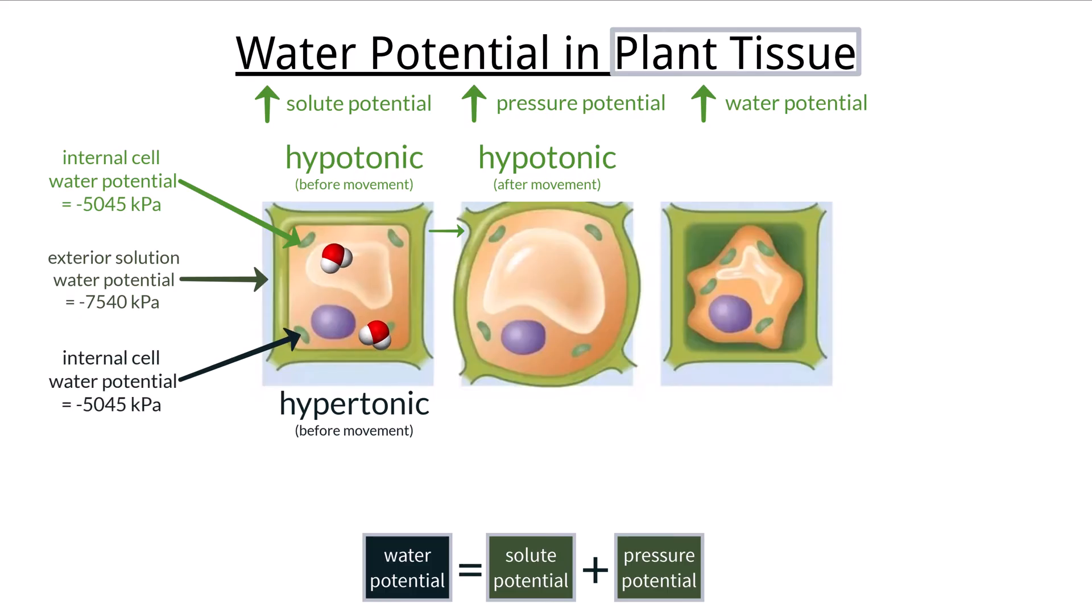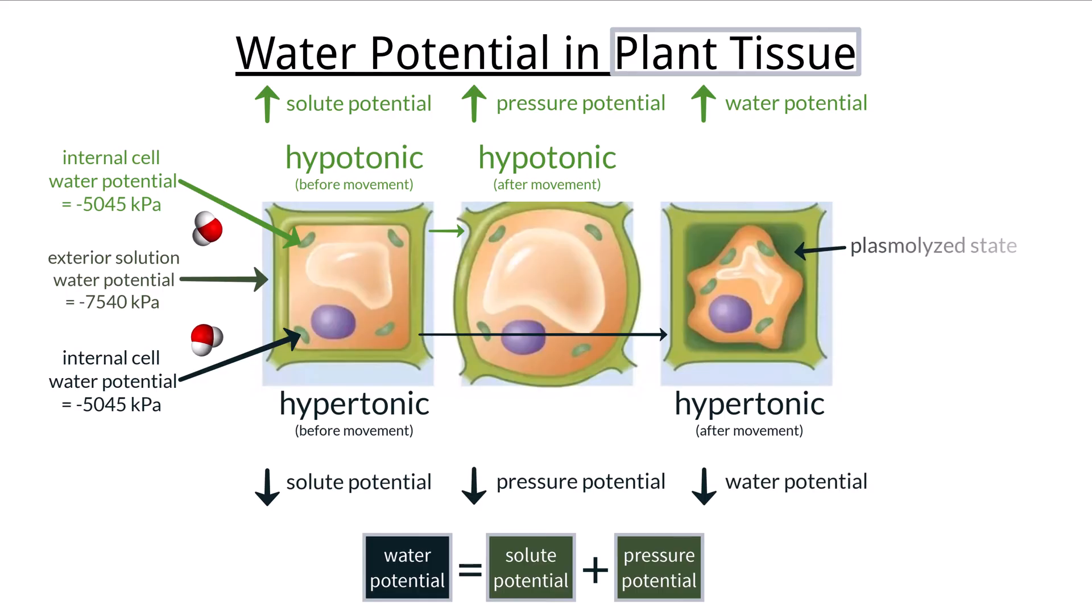This will force water to move out of the cell from a high water potential to a low one. In this process, the solute potential inside of the cell will decrease, becoming more negative, and the pressure will also decrease because it is losing water. This can greatly decrease the volume of the cell so much so that the membrane can break away from the cell wall and shrink into a plasmolyzed state.